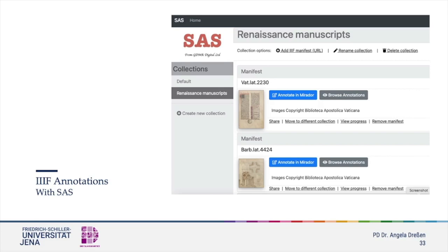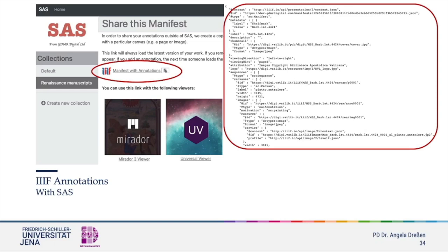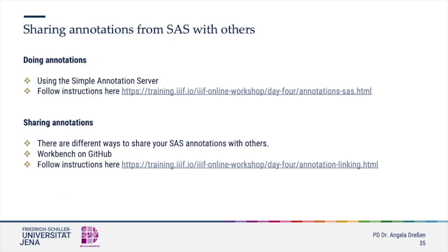When you want to see and search for annotations, you click back on top on the Home button. There you can either browse directly in your annotations or share them with others. If you like to share your annotations, you can do this within the manifest and copy it. Sharing the annotation manifest will give you the full code of the IIIF image or set of images, including the data for the annotations. You will find more explanation on how to use this on the help pages.